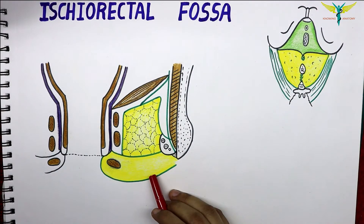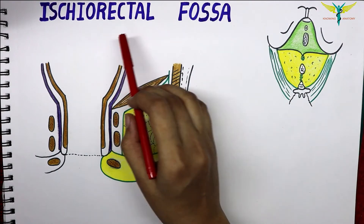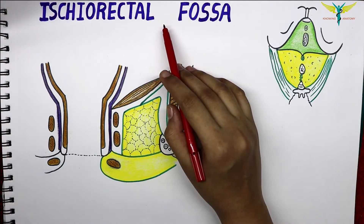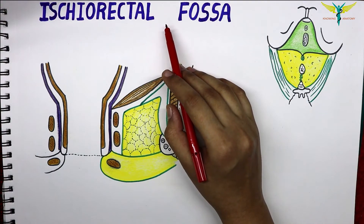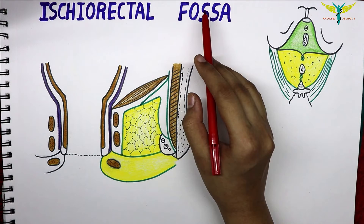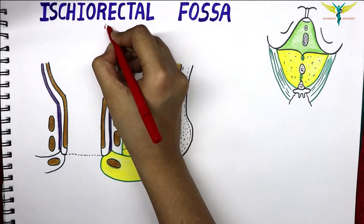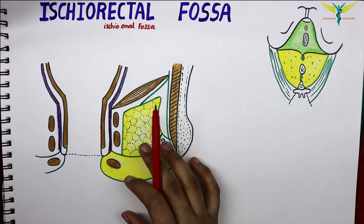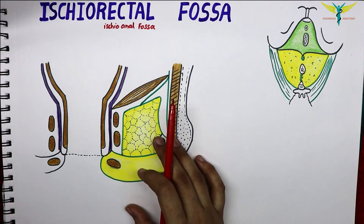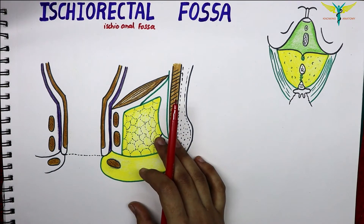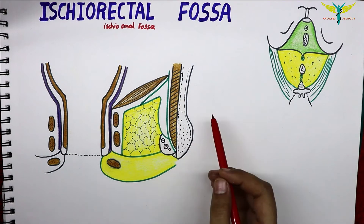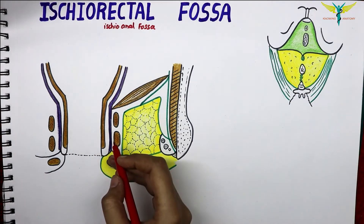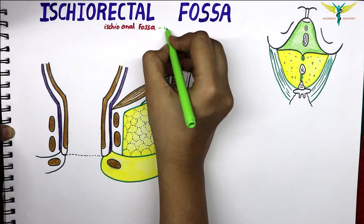In this video, let's talk about the ischiorectal fossa. The ischiorectal fossa is also called the ischioanal fossa. It is a wedge-shaped, fat-filled space situated on each side of the anal canal and below the pelvic diaphragm.